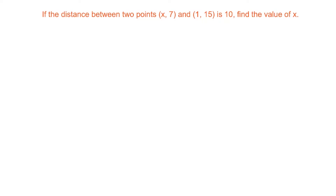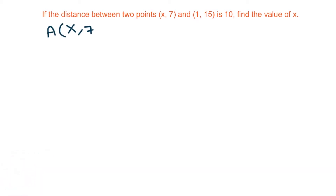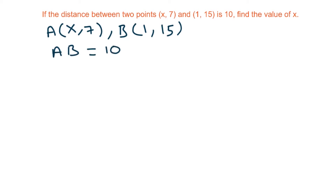If the distance between two points (x, 7) and (1, 15) is 10, find the value of x. Let point A be (x, 7) and B be (1, 15). It is given that the distance AB is 10. We will find the distance using the formula: d = square root of (x2 minus x1) whole square plus (y2 minus y1) whole square.